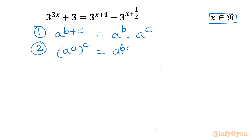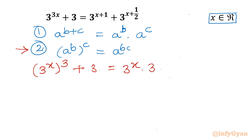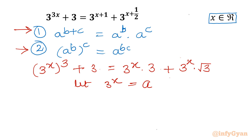Let's apply both properties to our equation. I can write 3^(3x) as (3^x)³ using the second property. The right-hand side becomes 3^x · 3^1 + 3^x · 3^(1/2), which is 3^x · 3 + 3^x · √3. Now 3^x is visible, so it's better to substitute it. Let 3^x = a. Since a is an exponential function, it cannot be negative — it must be greater than 0.